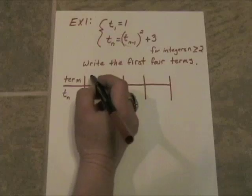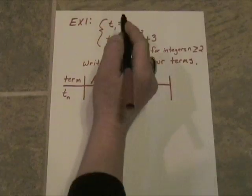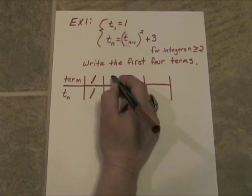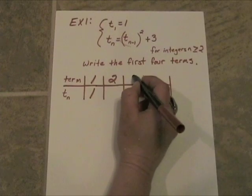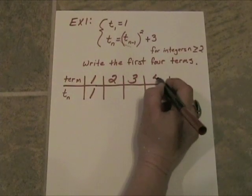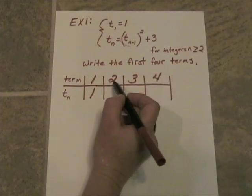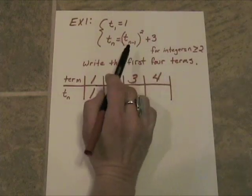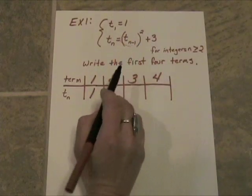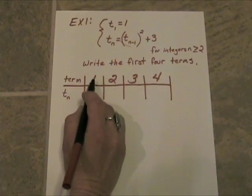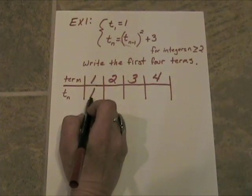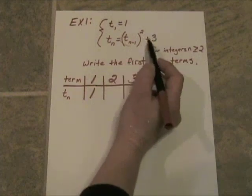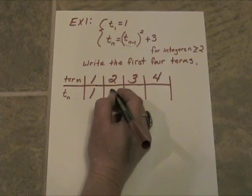So we want to write the first four terms. The first term has already been given to us, its value is 1. Now we want to find term 2, term 3 and term 4. So to find term 2 we have to use term 1. t sub n minus 1 would have been the first term. Its value was 1. We are going to square 1 and we will get 1 and then we will add 3. So 1 plus 3 is 4.